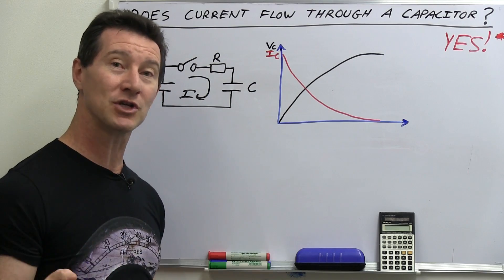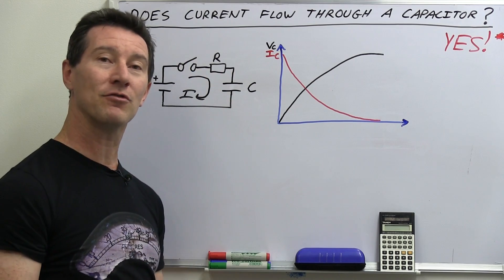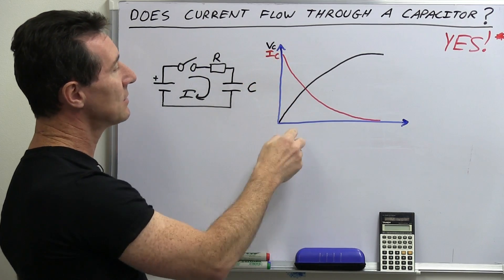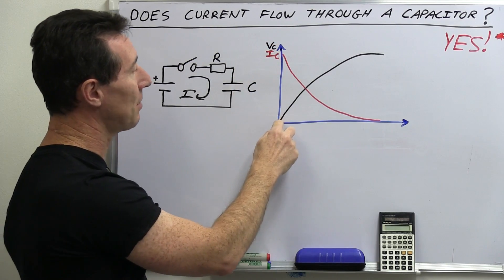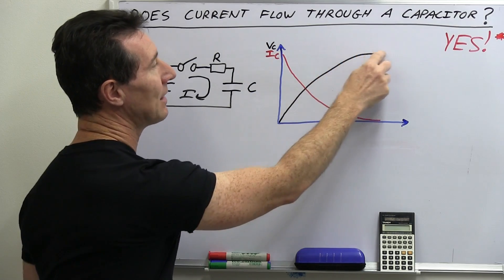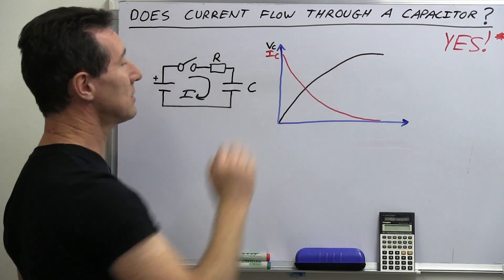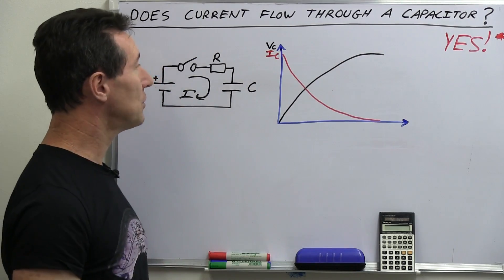A capacitor when you first, if it's got no charge on it, when you first start having current flow through the circuit, it has a voltage of zero. So that's this black graph here. So the y-axis here is the voltage across the capacitor. It starts to charge up until it reaches a point where it's fully charged, and the voltage just sits at the fixed level, which is your battery voltage over here.